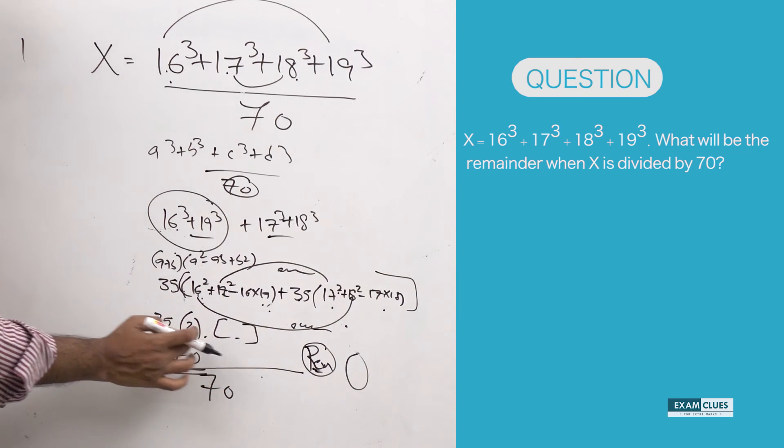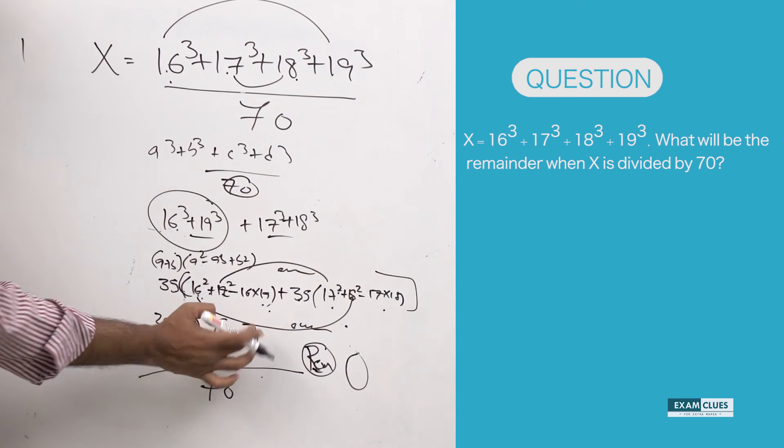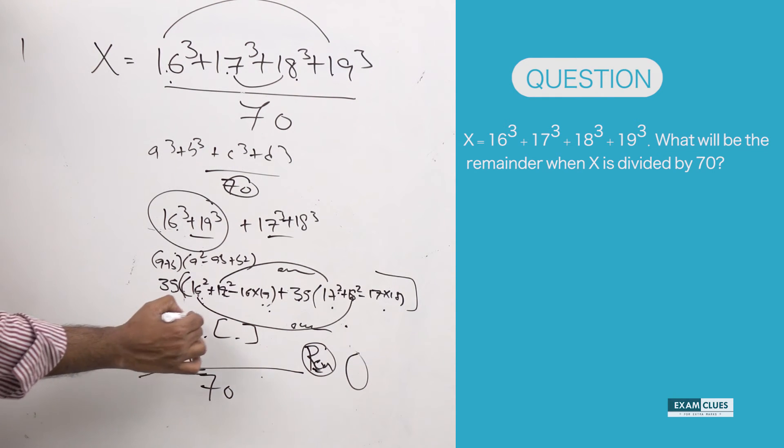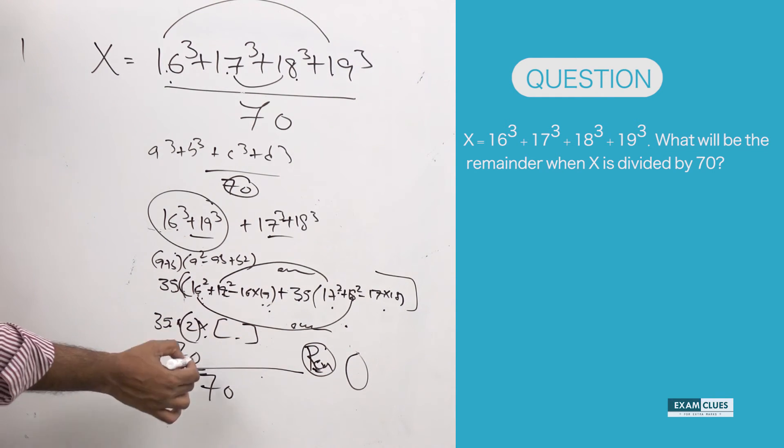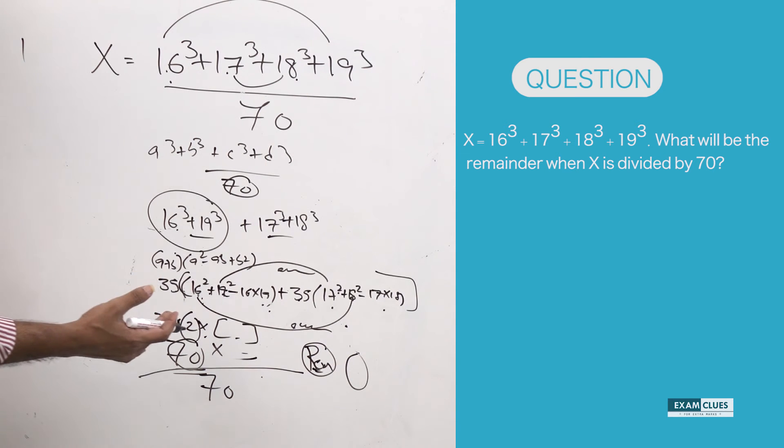So the final resultant will be even. So I am taking out another 2 out of that. I am just keeping the remaining here. So 35 into 2 into something is 70 into something. It is multiple of 70. So 70 can perfectly divide it. So this is how we can solve this question very quick.